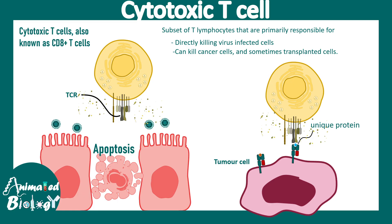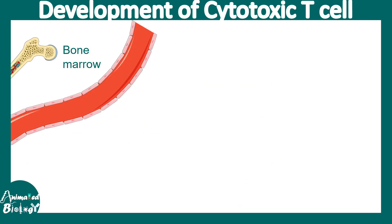So these cells play two important roles: killing virus-infected cells and eliminating cancer or tumor cells. Now let's zoom into the bigger picture — where do these cytotoxic T cells come from, and how do they develop?